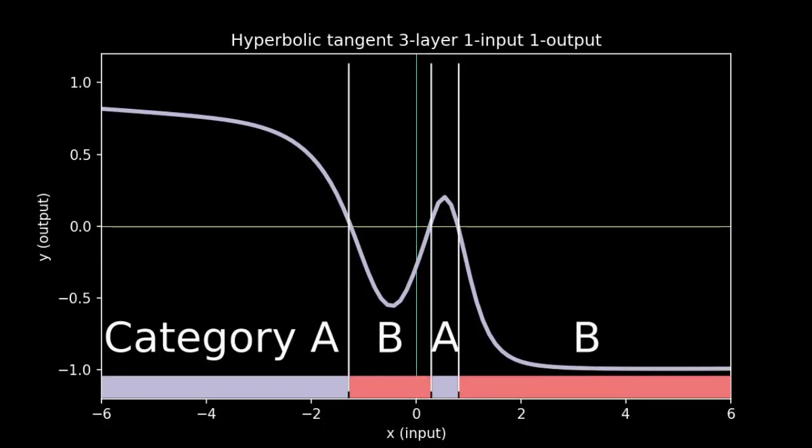What distinguishes these nonlinear classifiers from linear ones is that they don't just split the space into two halves. In this example, regions of A and B are interleaved. Building a classifier around a multilayer nonlinear network gives it a lot more flexibility. It can learn more complex relations.